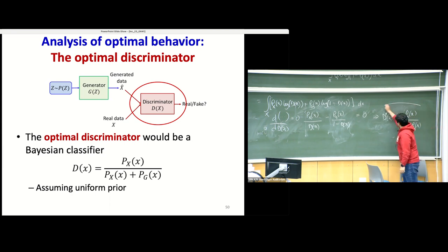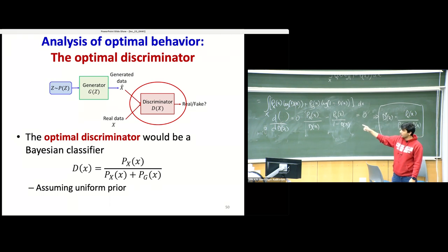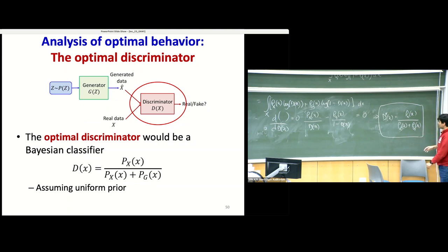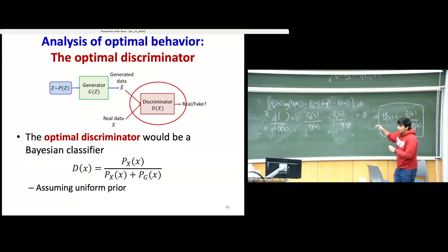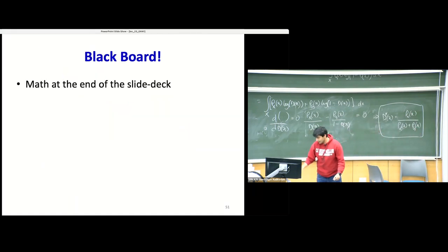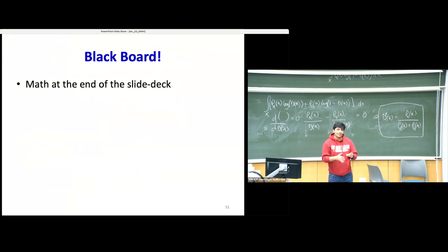This is the optimum Bayes classifier: it assigns the probability of a data point being real as the probability under the real distribution over the sum of the probabilities under both the real and generated distributions. The math is at the end of the slide deck. Now we have the optimum classifier, and we can try to make a generator which will beat this optimum discriminator.